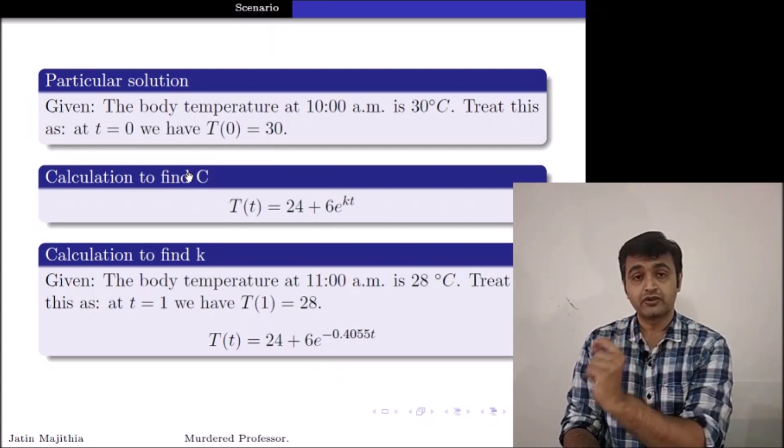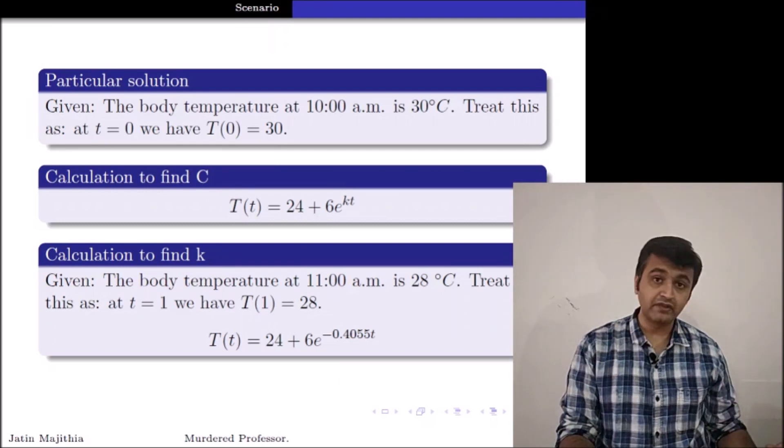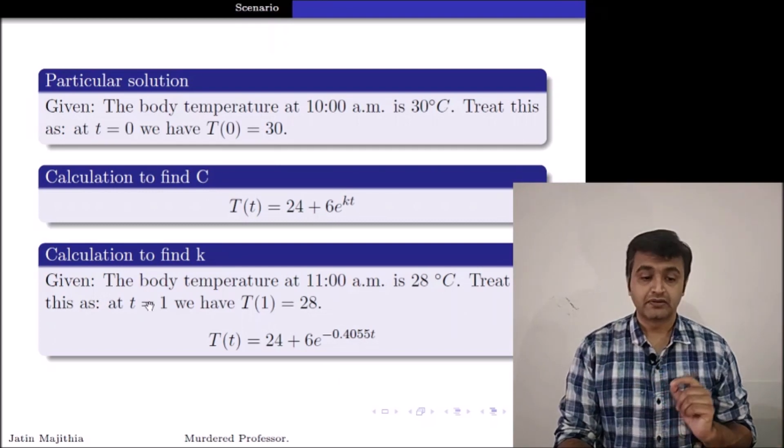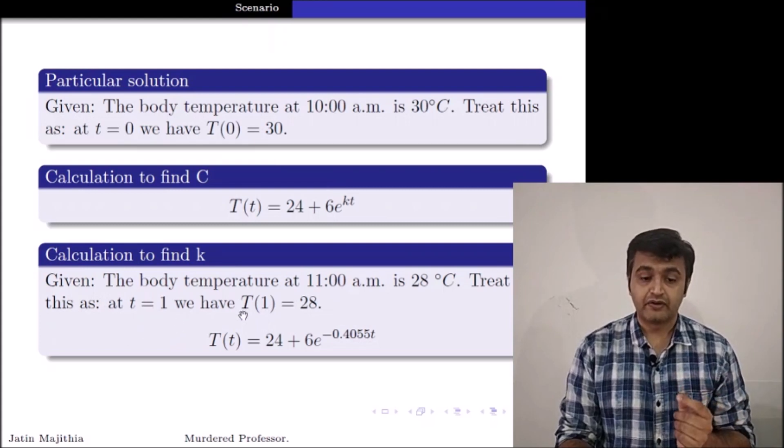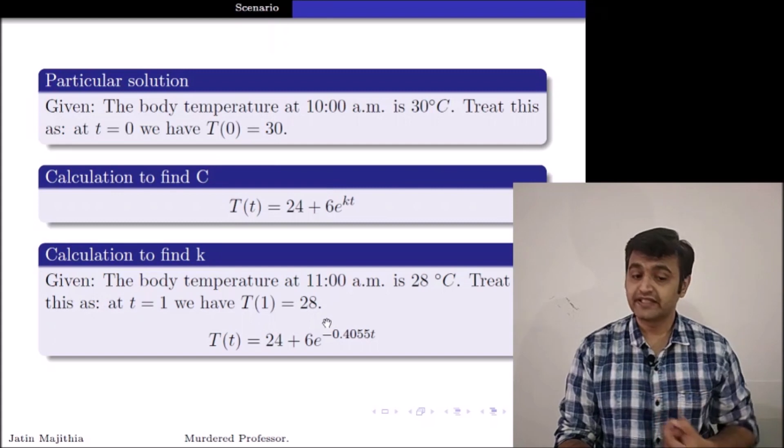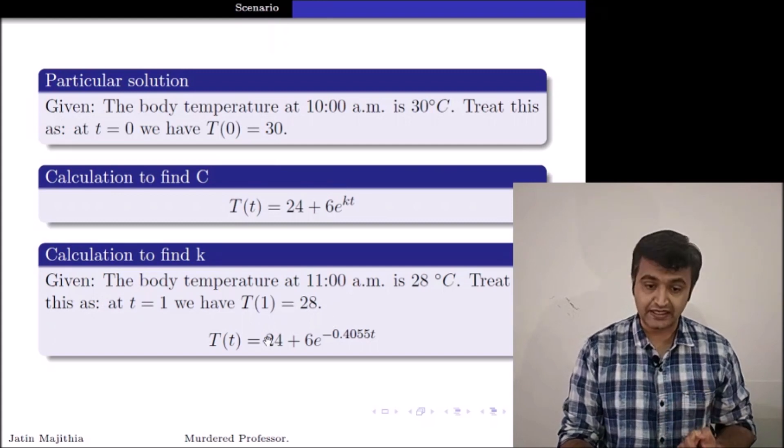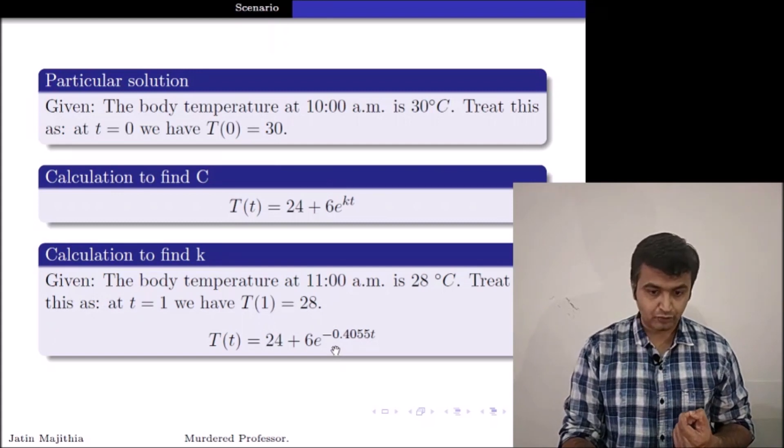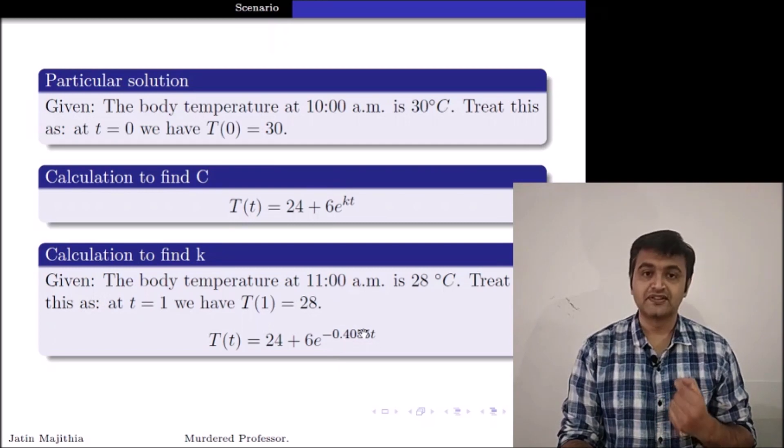Now, T equal to 0 corresponded to 10 AM. So T equal to 1 will correspond to 11 AM. So when I replace small t by 1, what is my capital T? Which is nothing but the temperature of the body. Temperature is 28 degree. So if I put the value in, if I do the calculation, value of K is coming out to be minus 0.4055.